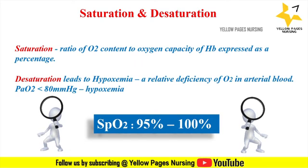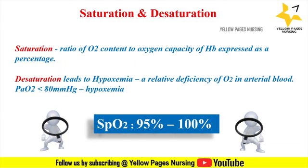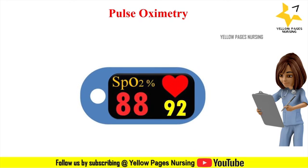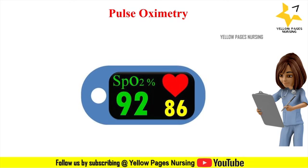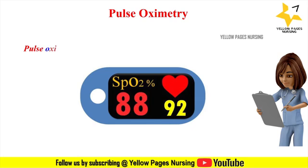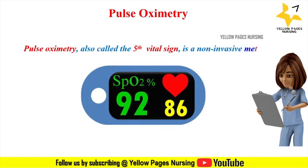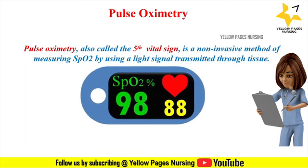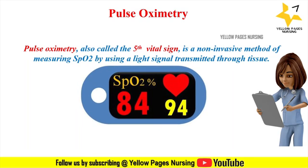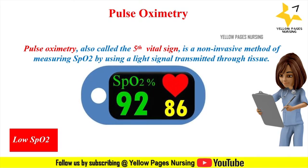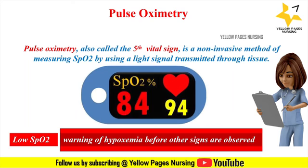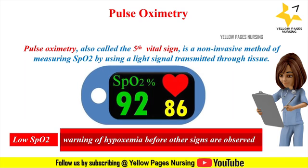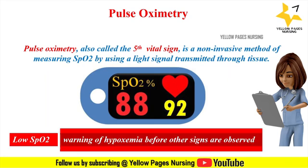How is oxygen saturation monitored? Here comes the term pulse oximetry. Pulse oximetry, sometimes called the fifth vital sign, is a non-invasive method of measuring SpO2 using a light signal transmitted through the tissues. A low level of SpO2 can provide warning of hypoxemia before other signs such as cyanosis or a change in heart rate are observed.